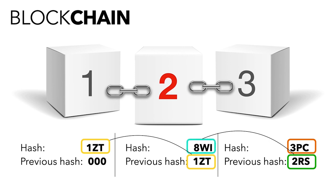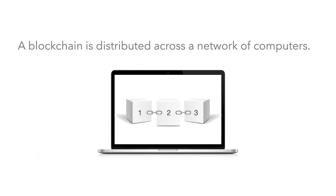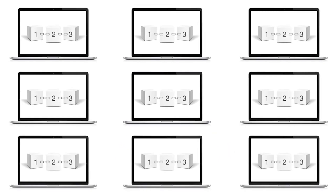Let's say you tamper with the data inside the second block. The hash would change as well, and block two would no longer link to block three. In addition to the security provided by the block hash, a blockchain is shared across a large distributed network of computers.